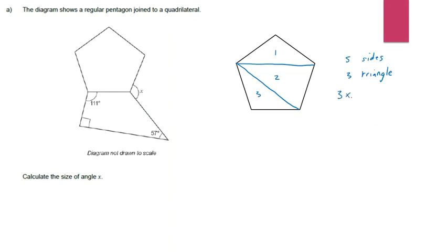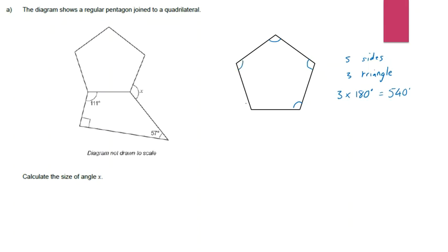The number of triangles is always two less than the number of sides. Five take away two gives me three, and each triangle contains 180 degrees. So the sum of all angles in the pentagon is 3 × 180 = 540 degrees. Because all angles are equal in a regular pentagon, I divide 540 into five equal parts, which gives me 108. So each interior angle is 108 degrees.